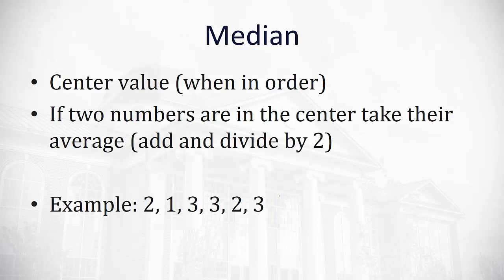A second measure of center is called the median. This is the actual physical center value when the numbers are first put in order. If there's no middle value where we have two numbers in the center, we'll take the average of those two center numbers by adding them together and dividing by 2.